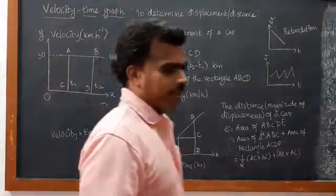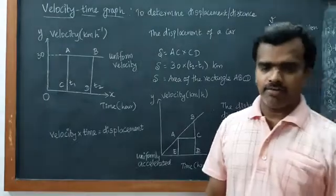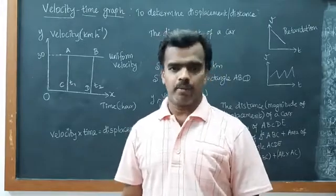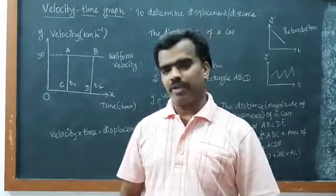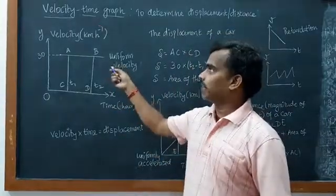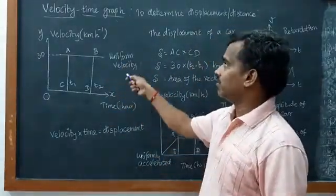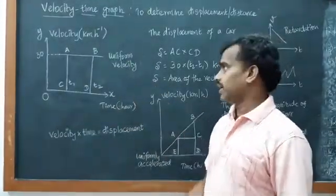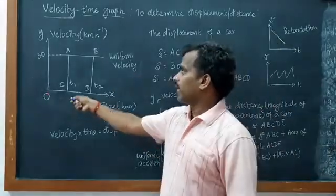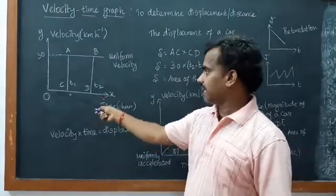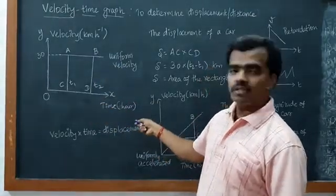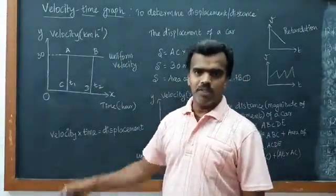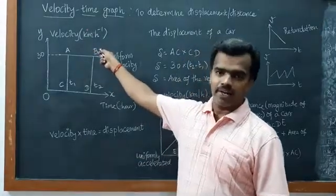Welcome back. Next we have velocity-time graphs. Previously we have seen distance-time graphs — the use of which is to determine the speed of an object. In a velocity-time graph you can find out the distance. On the y-axis I have taken velocity and on the x-axis I have taken time — time in hours and velocity in km per hour. Velocity is displacement by time, so displacement is in km and time in hours.